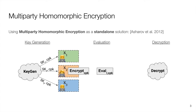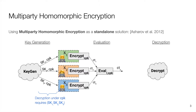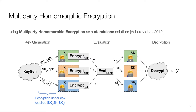In the key generation phase, the parties participate in the key generation protocol in order to obtain their secret keys, as well as a collective public key, with the property that decryption under this collective public key requires the knowledge of each of the secret keys. In the evaluation phase, the parties encrypt their private inputs using the collective public key, and use the homomorphic evaluation capabilities of the scheme to carry out the evaluation of the desired function. After this phase, the function's output is available, yet it is encrypted under this collective public key. Hence, in the decryption phase, the parties obtain their final results by means of the decryption protocol.